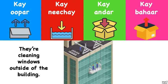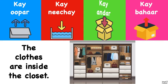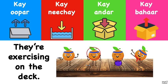They're cleaning windows outside of the building. Outside. Ke upar, ke neiche, ke under, or ke bahar? This would be ke bahar. The clothes are inside the closet. Inside. Would that be ke upar, ke neiche, ke under, or ke bahar? Ke under. They're exercising on the deck. On the deck. Would that be ke upar, ke neiche, ke under, or ke bahar? That would be ke upar.